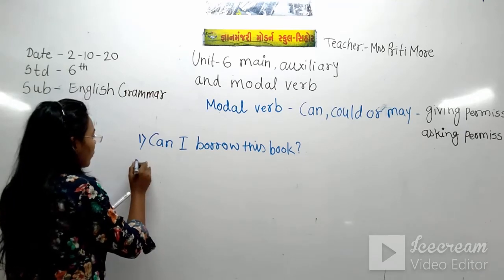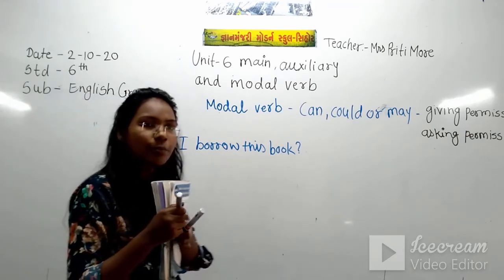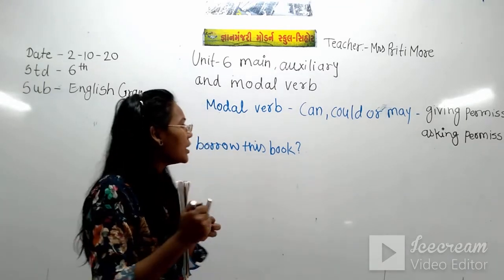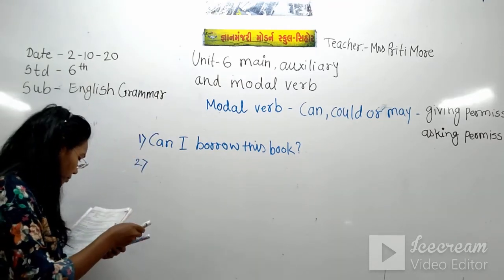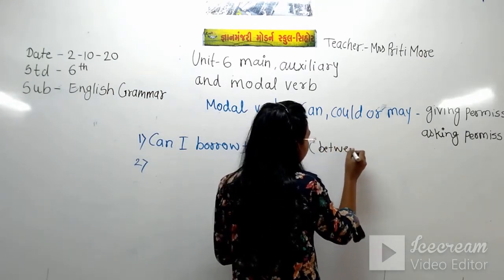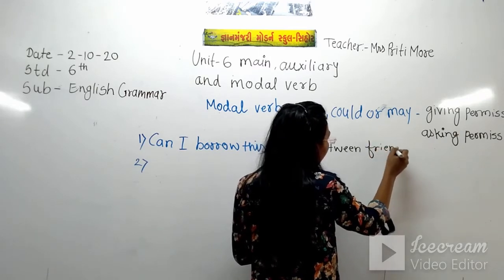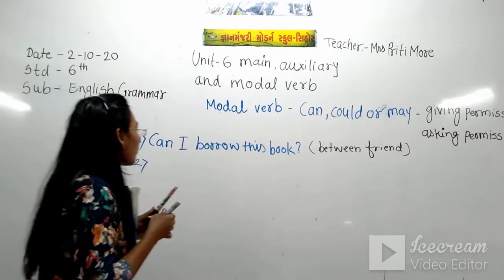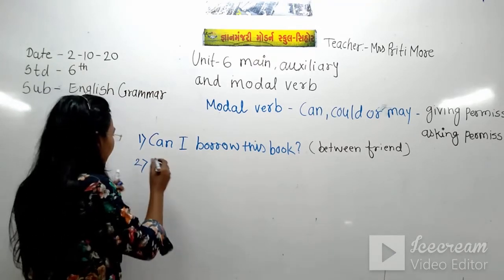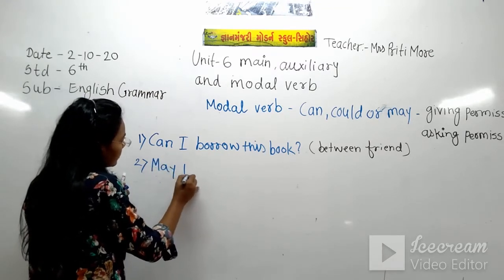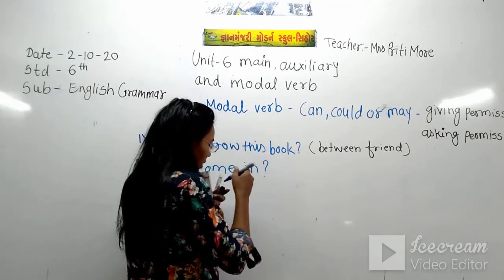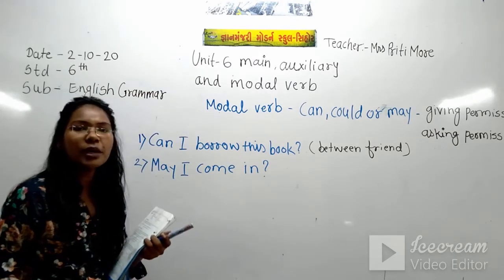When we ask for permission in an informal setting — among friends or with family — we use can. For example, between friends. The next sentence is: 'May I come in?' This may is also used for permission.